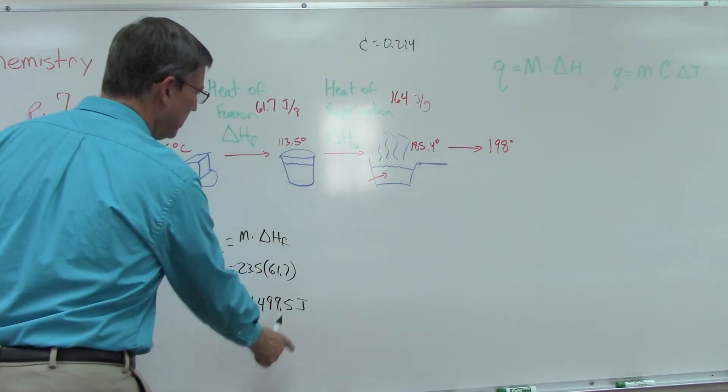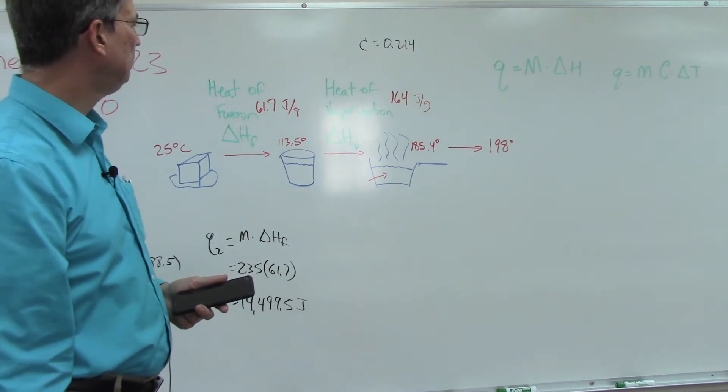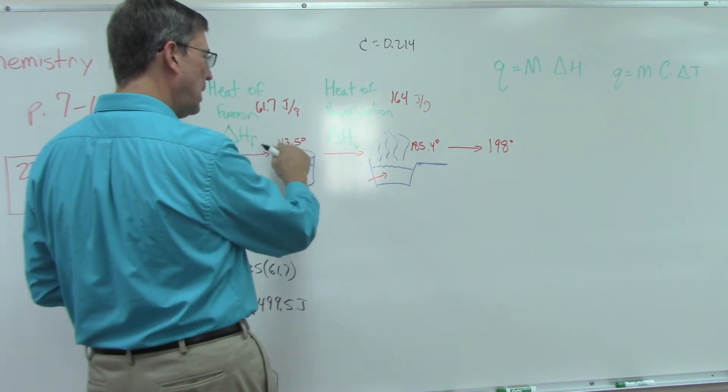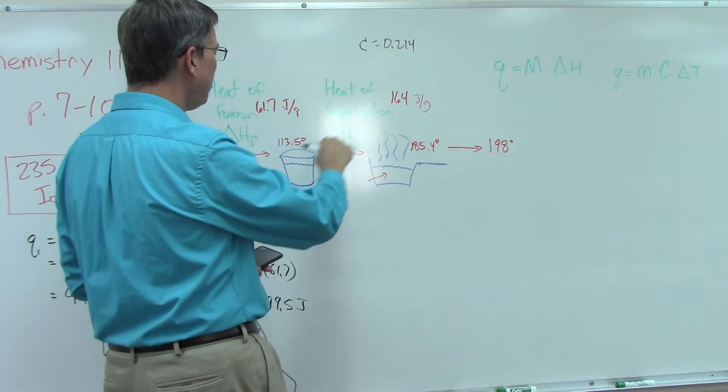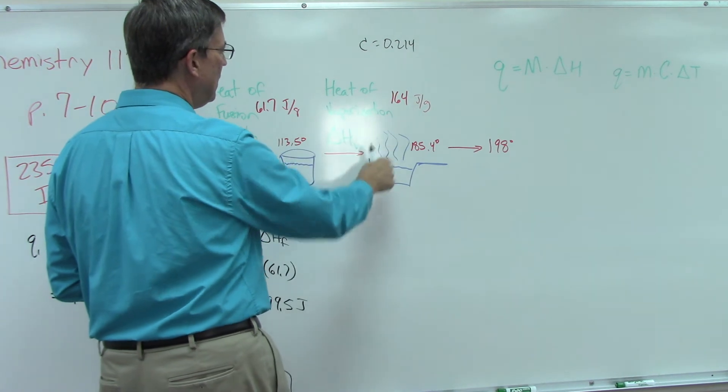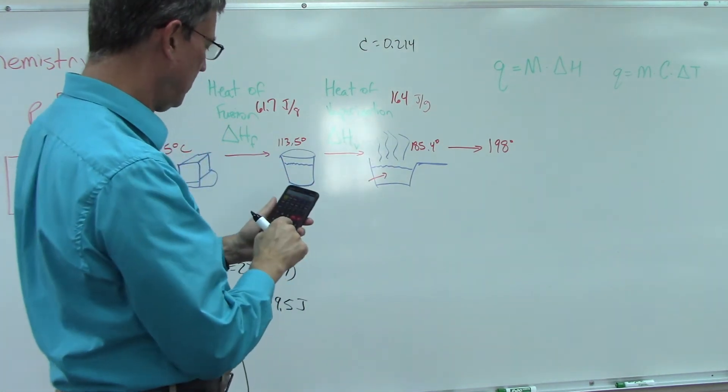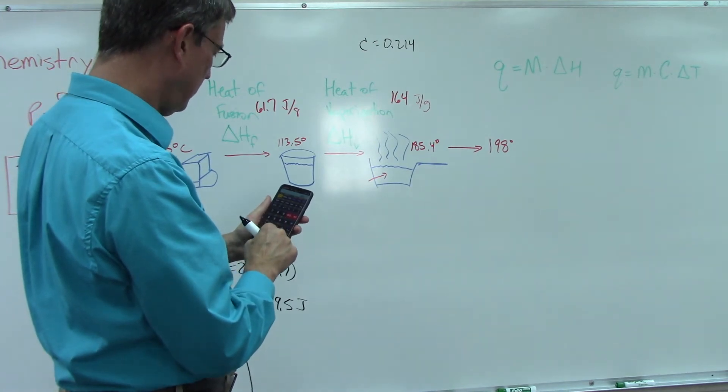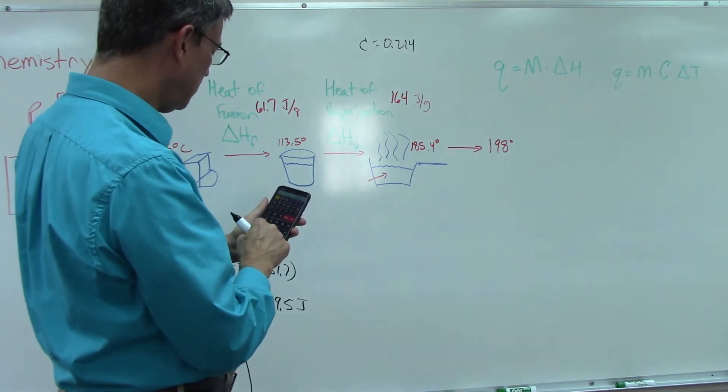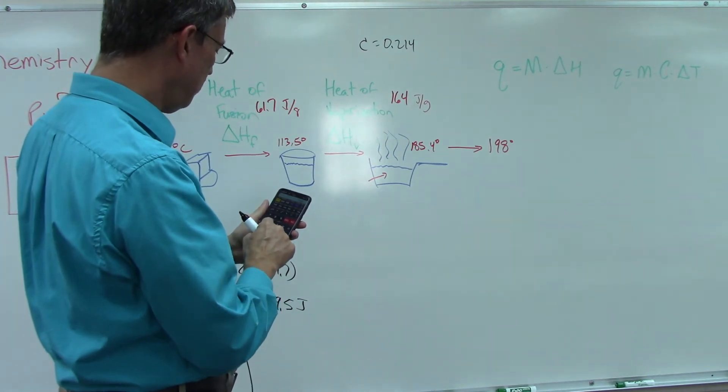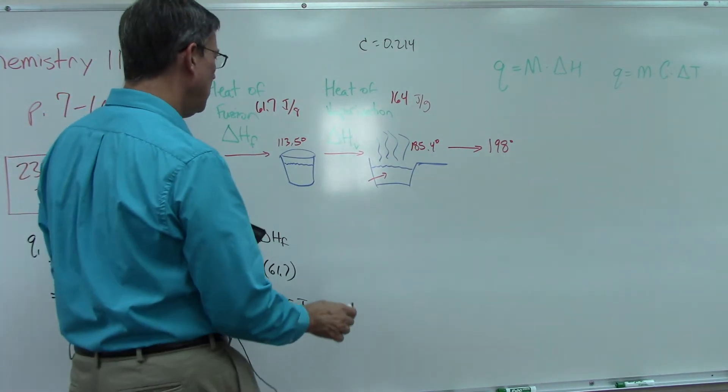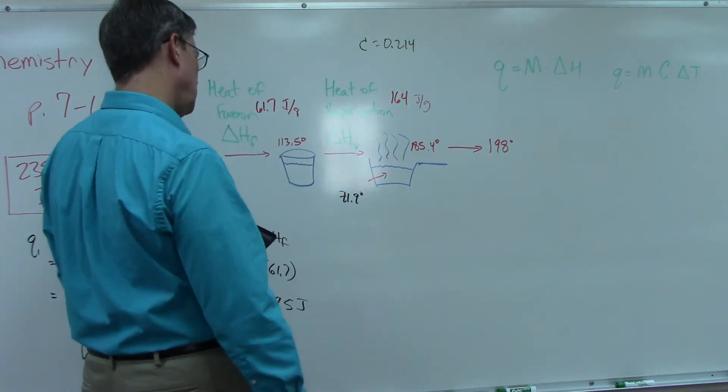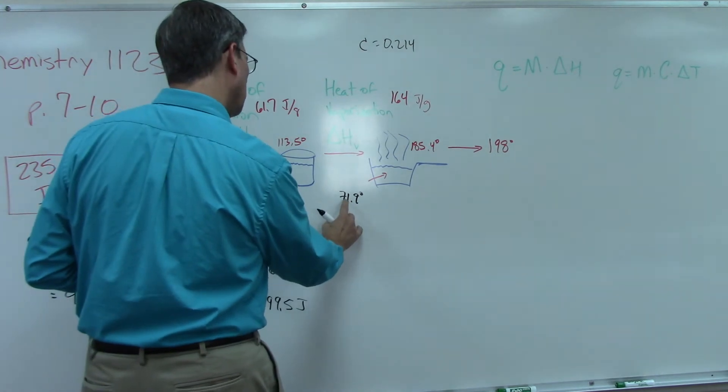What's the next thing? Now that it's all in liquid form, the temperature can change. It can gradually go up from 113.5 to 185.4. Let's figure out what that temperature change is: 185.4 minus the starting temperature of 113.5 equals 71.9.